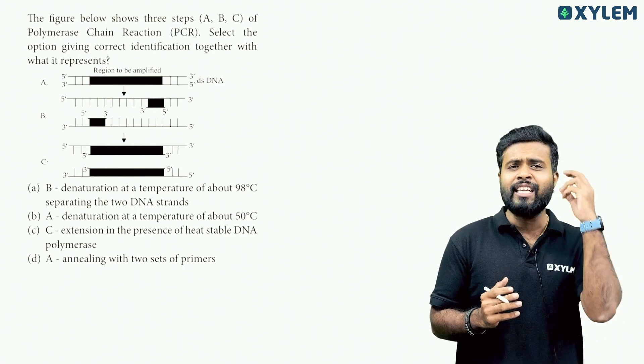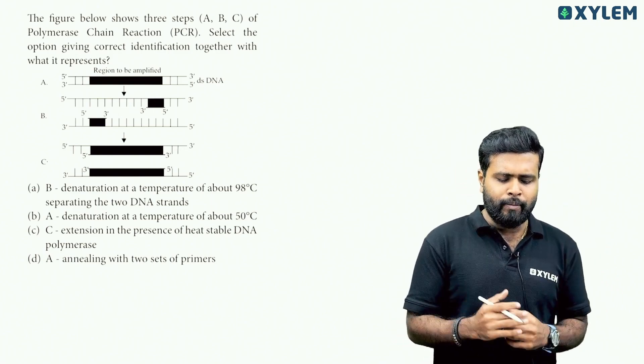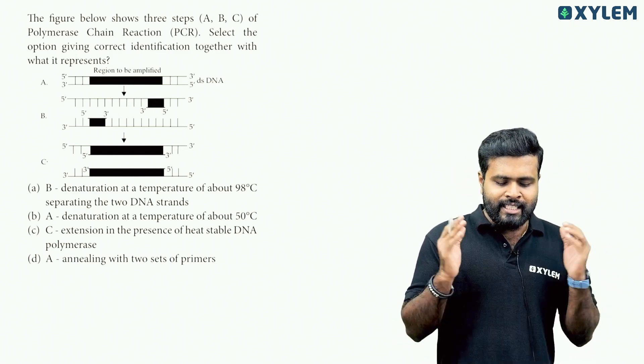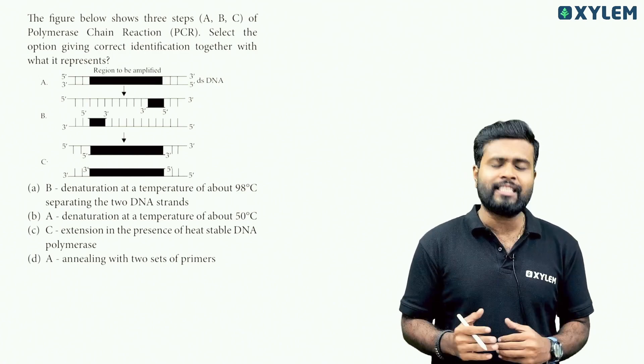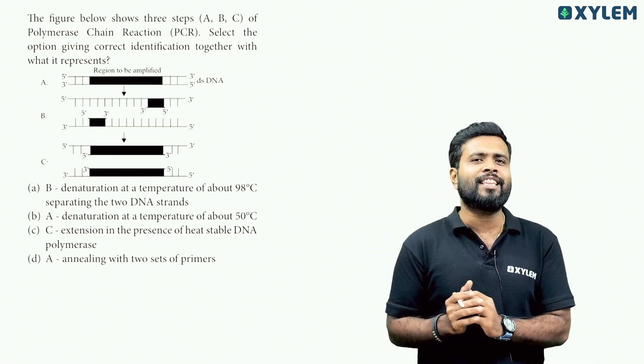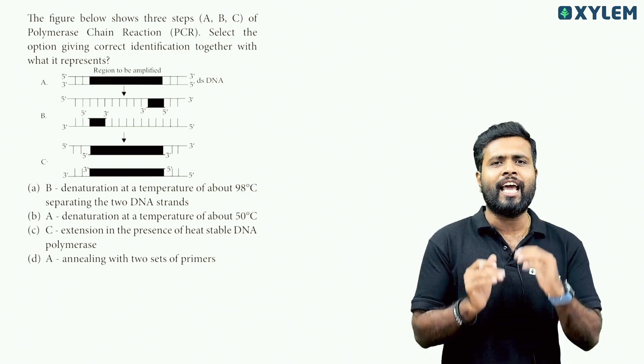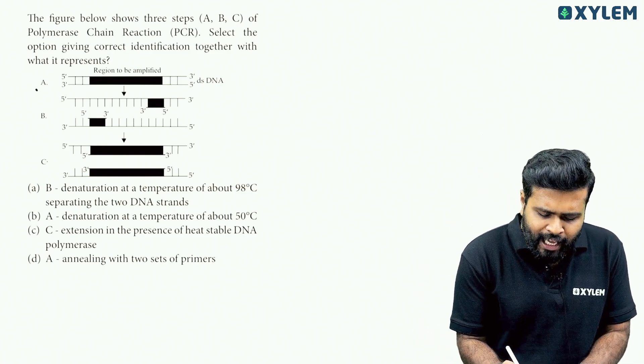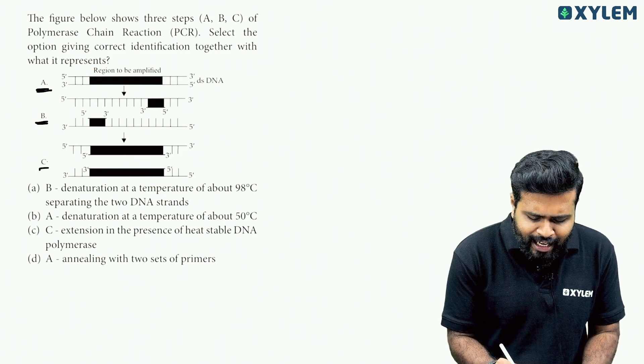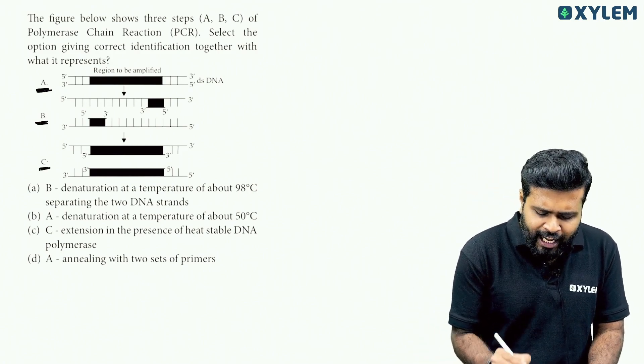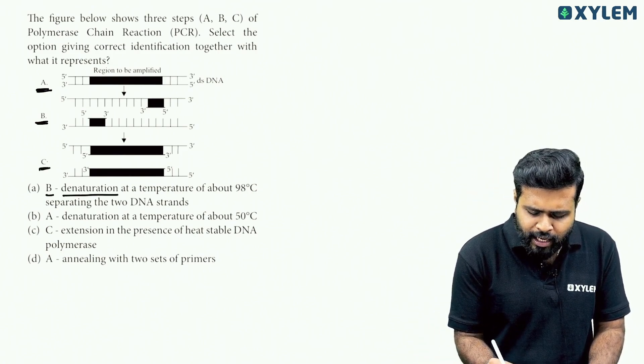Next question. The figure below shows three steps A, B, C of polymerase chain reaction PCR. Select the option giving correct identification together with what it represents. If A, B, C and the descriptions match, that is the right answer. This option is the right answer if we have denaturation, annealing, and extension. So option A is the right answer.